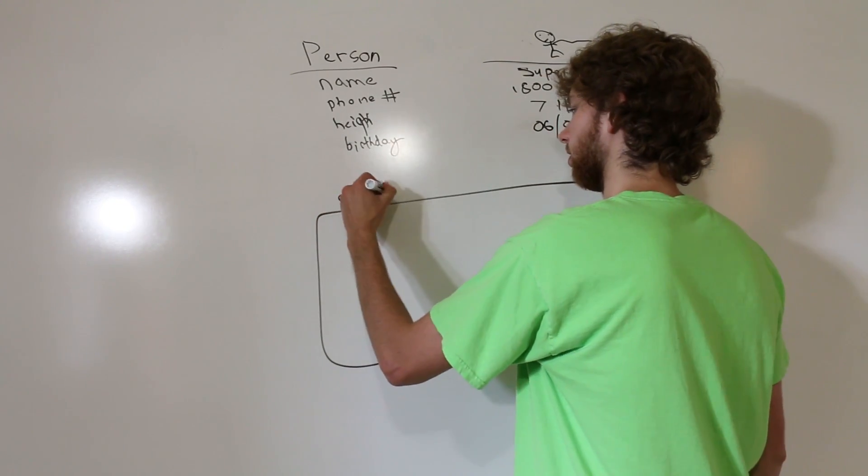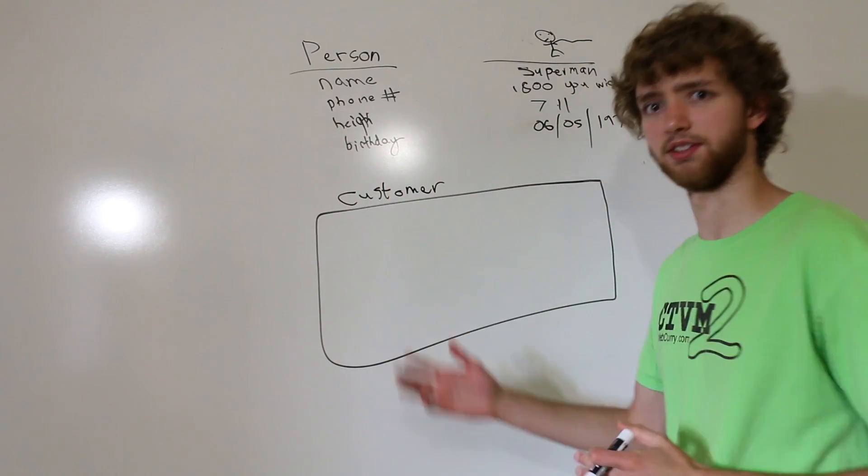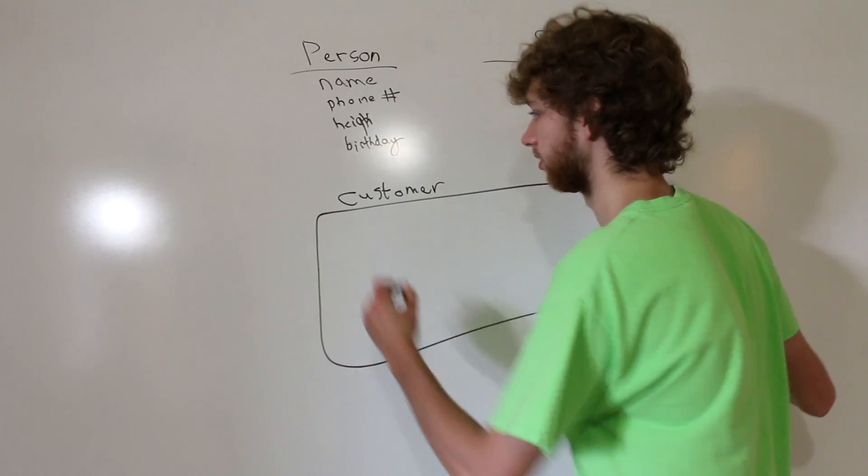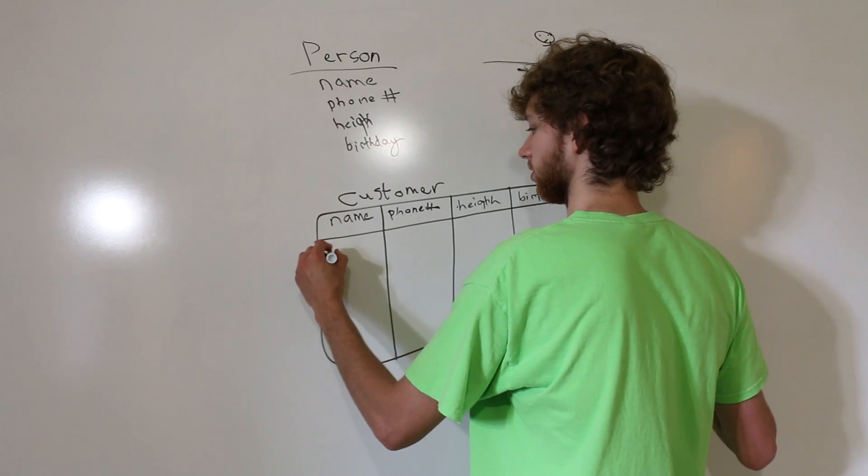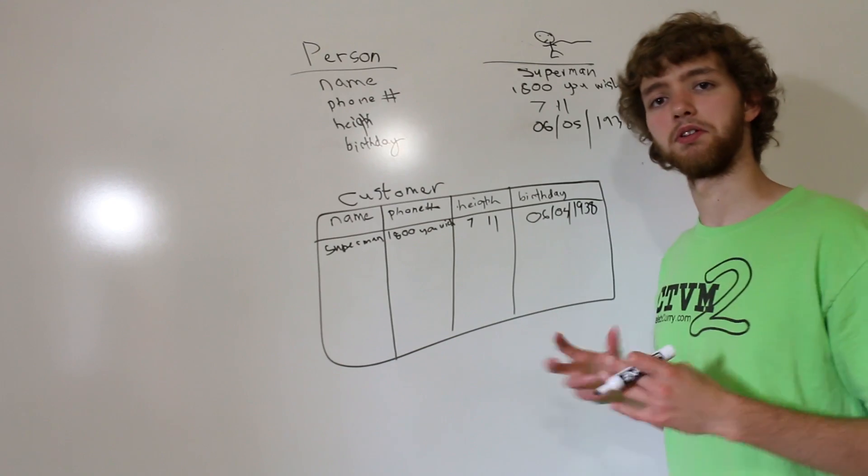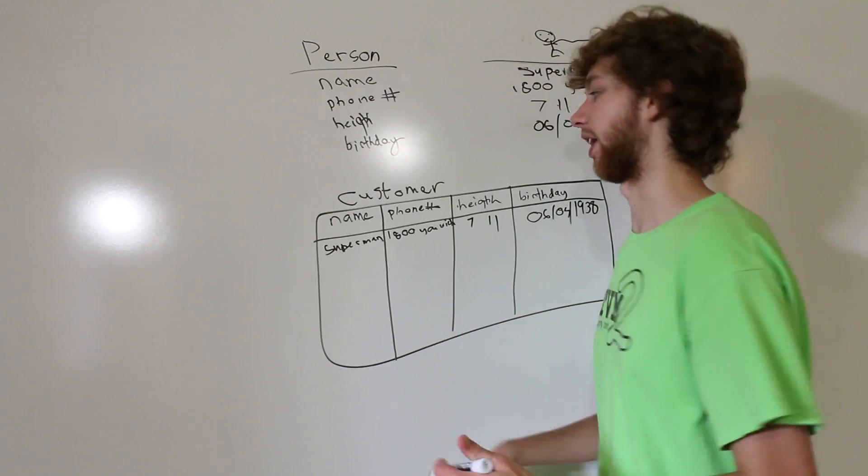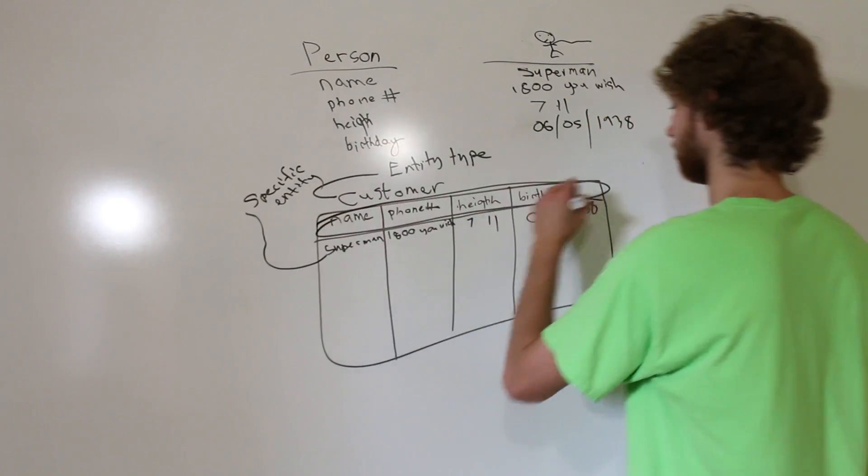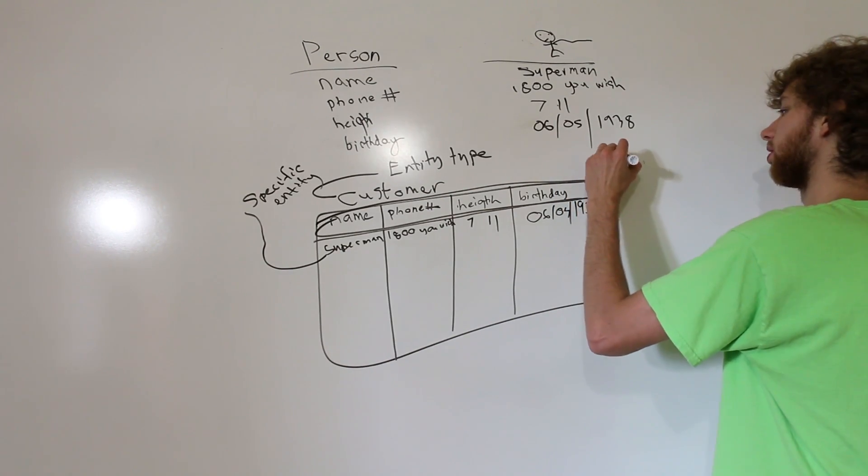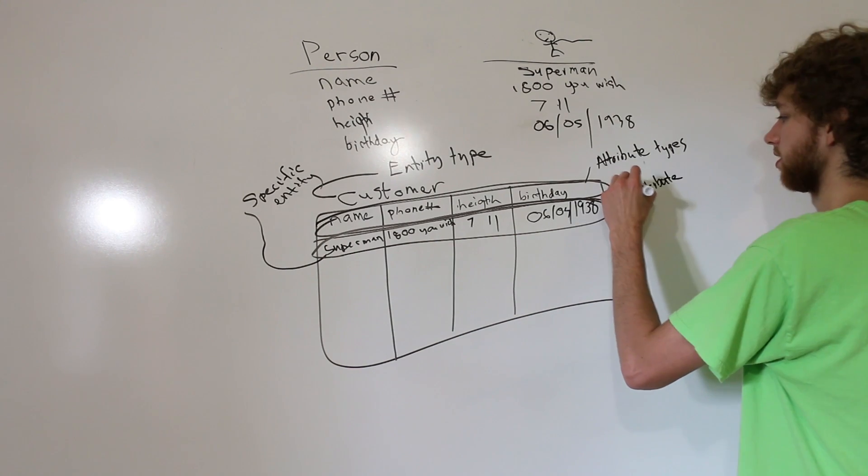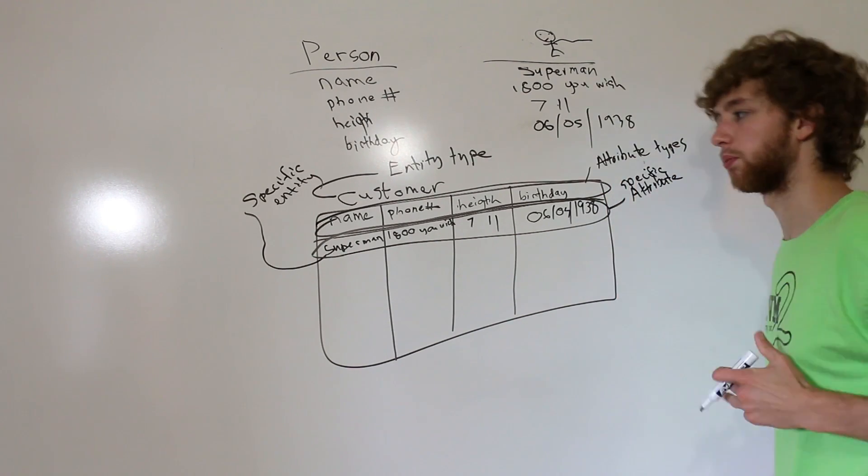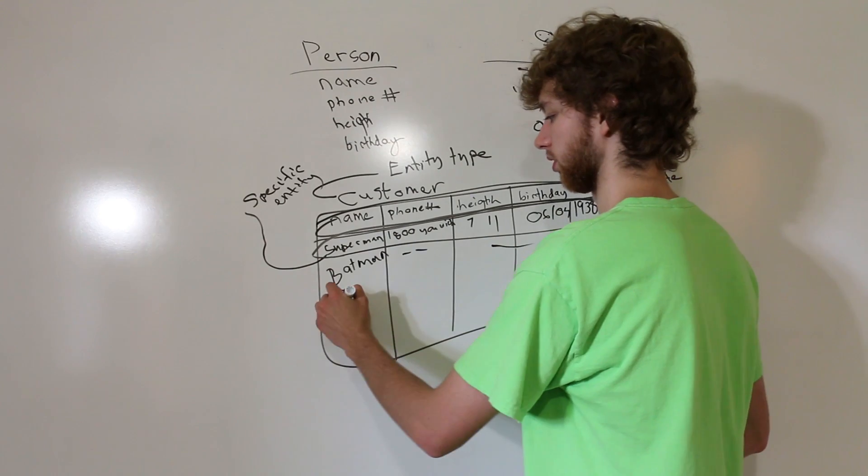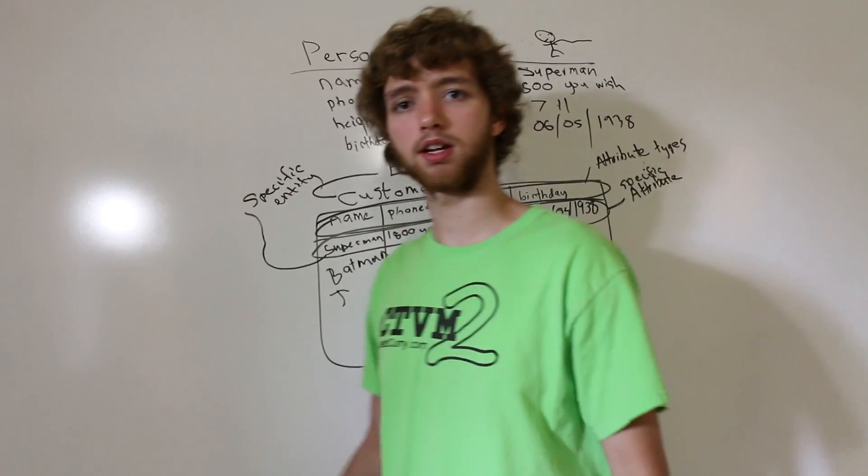So if we have a table, we can make this customer. Now we can also give these columns. So we could put Superman. This is basically the same pattern we're going to do for every single table. Here we have the entity type, here we have the specific entity, here we have the attribute types, here we have specific attributes. Now if we wanted to add another person in here we could - we could put Batman.